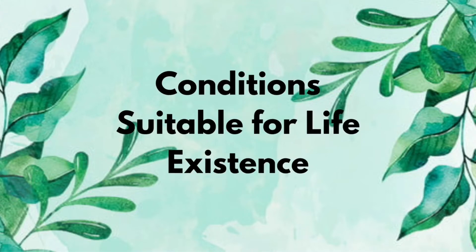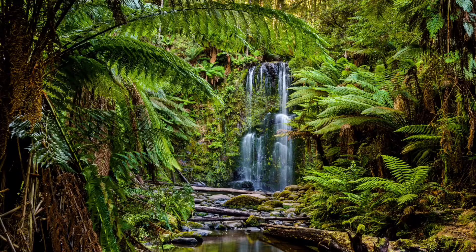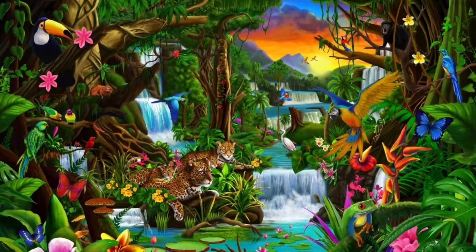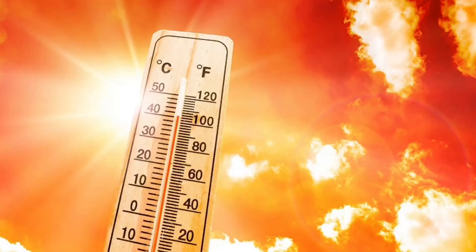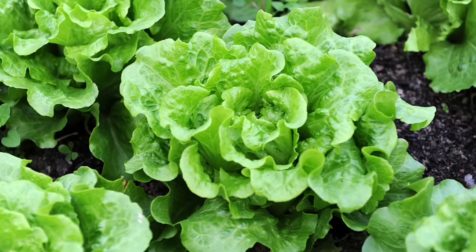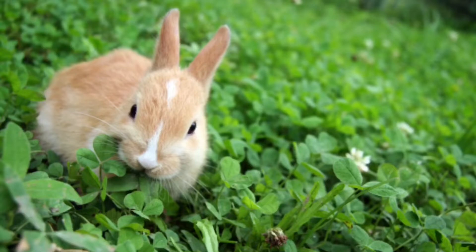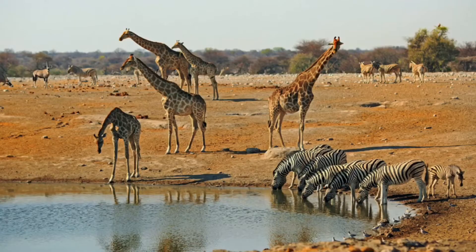Conditions suitable for life: habitats support life because they have conditions that suit the organisms that live there. The conditions necessary for life include a relatively stable temperature range, space for organisms to live and grow, sources of food, water, and gases such as oxygen and carbon dioxide.